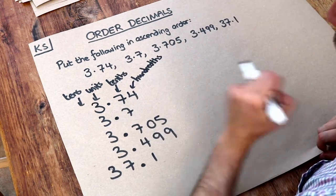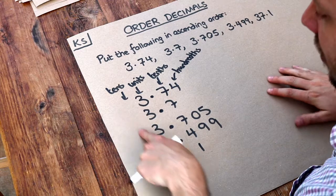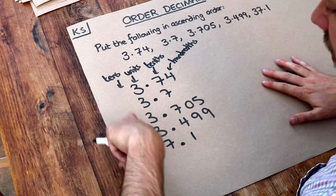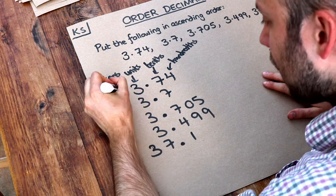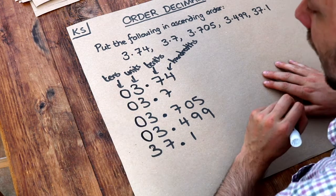Now as we saw in the video on ordering whole numbers, we always look at the place value of the highest worth first. So we're going to look at the tens digit. Now effectively there's no digit here, so they're effectively zeros. So let's put a zero there for the tens digit, because we don't have any tens.